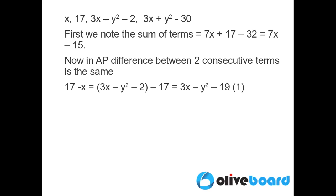Which means that 17 - x, which is the difference between the second term and the first term, will be equal to 3x - y² - 17, which is the difference between the third term and the second term, giving us 3x - y² - 19. Let's call this equation 1.